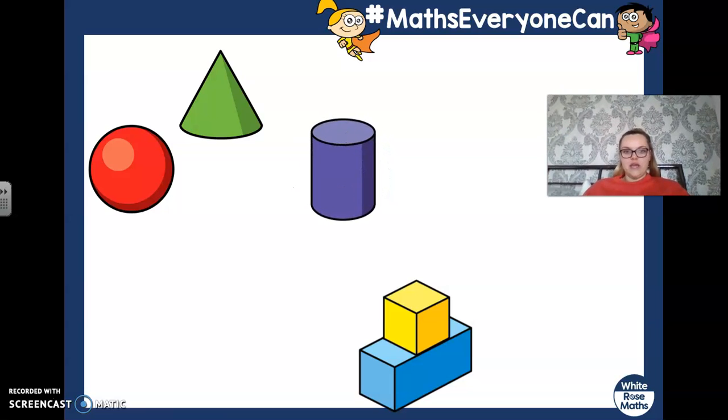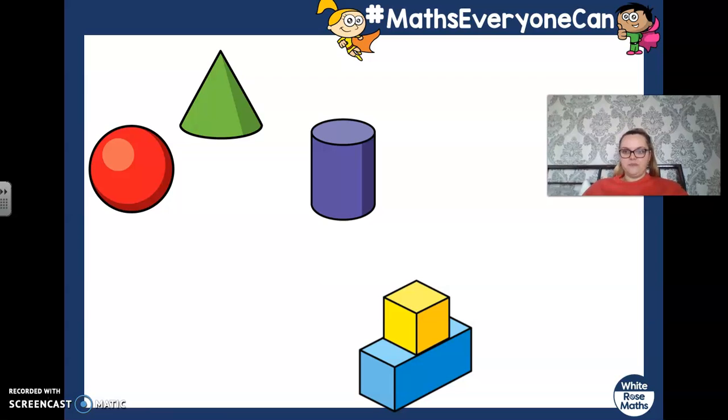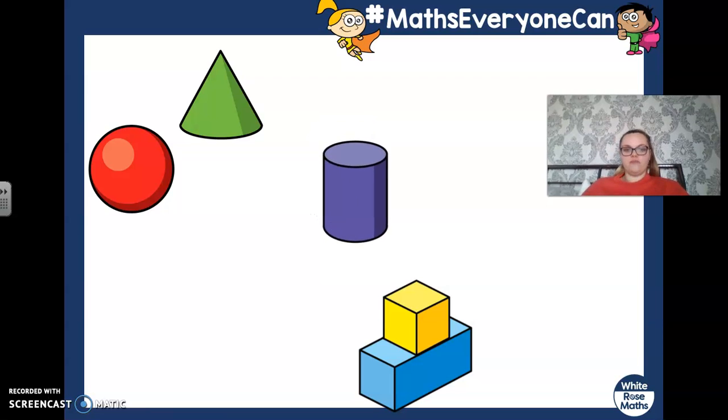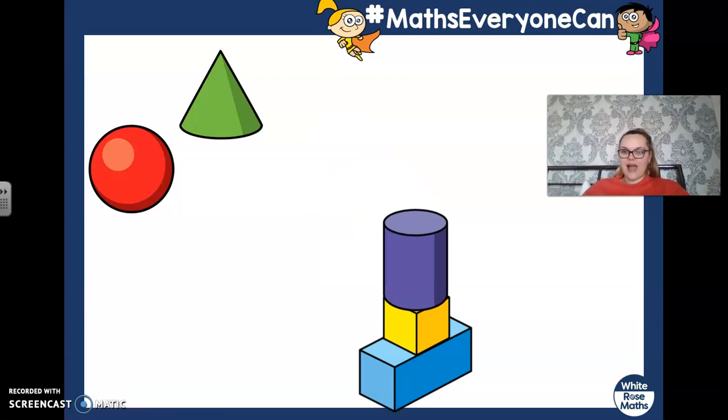So instead, I'm going to put my cylinder this way. Because at the top and at the bottom of my cylinder, I have two flat surfaces. And that will stay on the top of my cube, just like this.